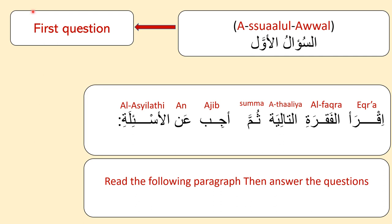The first question in Arabic is 'As-su'aal al-awwal'. Next: 'Iqra al-fiqrata at-taaliya thumma ajib 'anil as'ila' — 'iqra' meaning read, 'al-fiqrata at-taaliya' meaning the following paragraph, 'thumma' meaning then, 'ajib' meaning answer, and ''anil as'ila' meaning the questions.